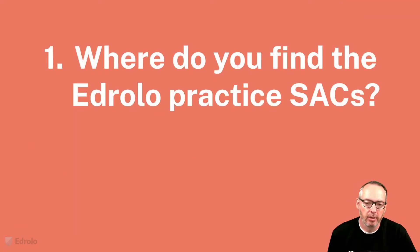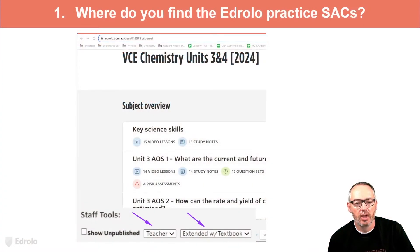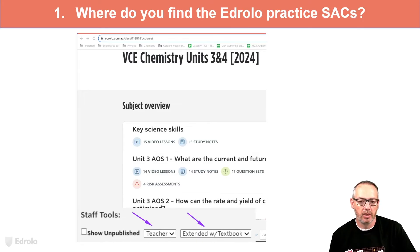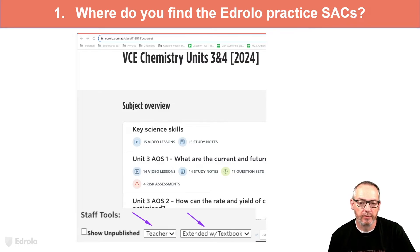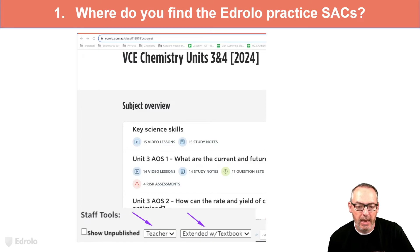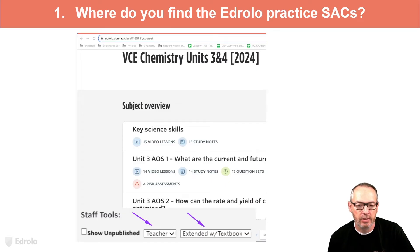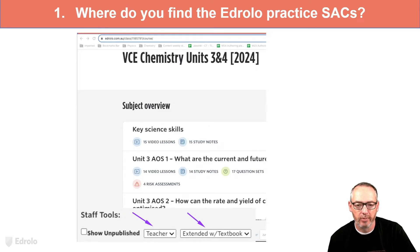Location — where do you actually find our practice SACs? On the platform, the most important thing is getting the correct year, so the 2024 VCE Units 3 and 4 book. And even more important, make sure that you have Teacher and Extended with Textbook. If you do not have the Extended with Textbook, you will not be able to access the practice SACs.